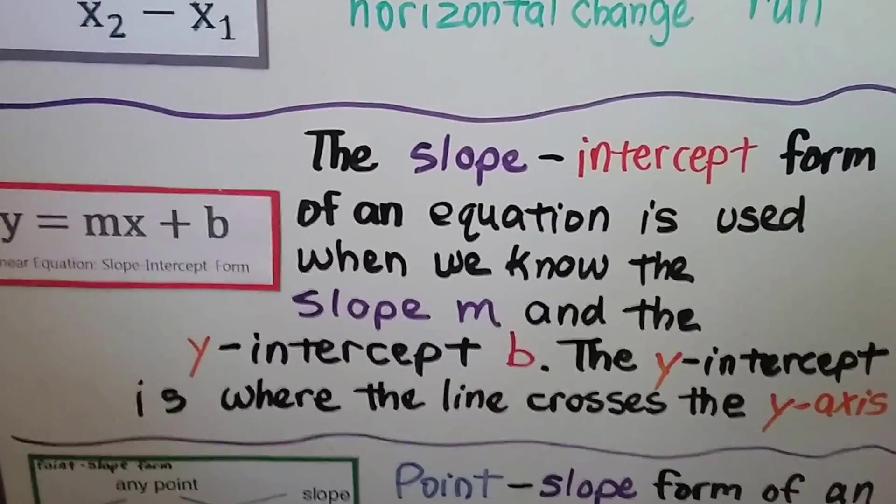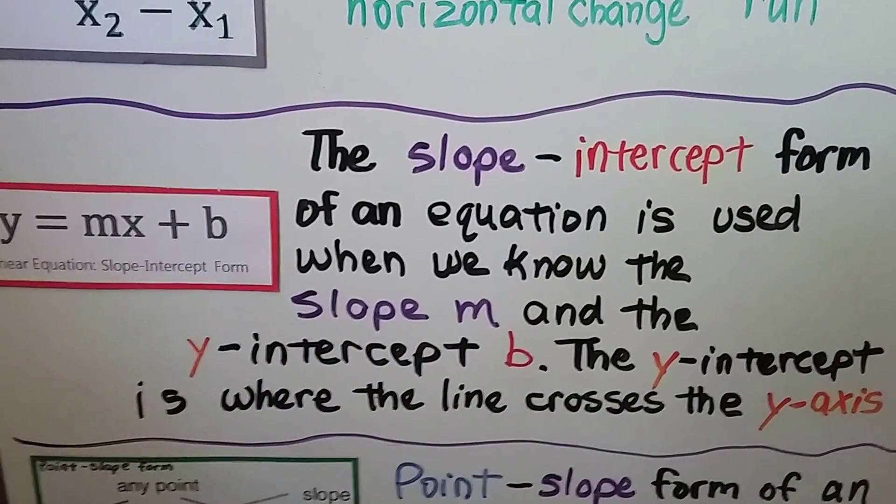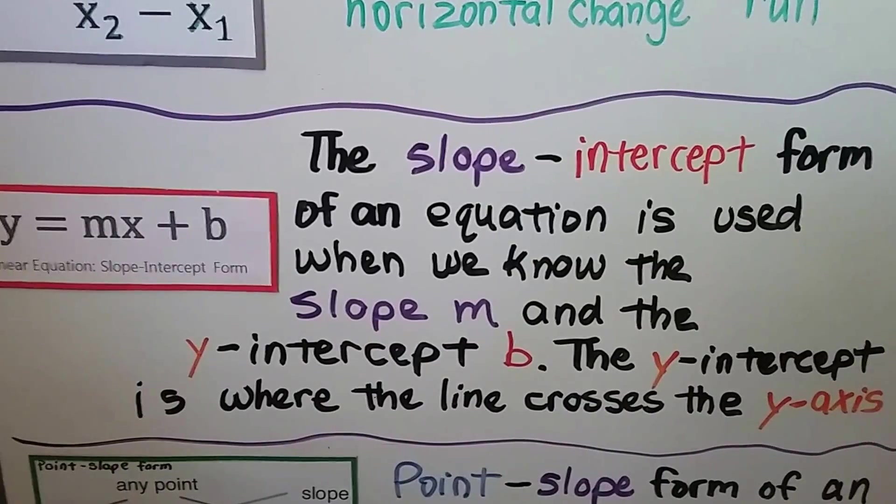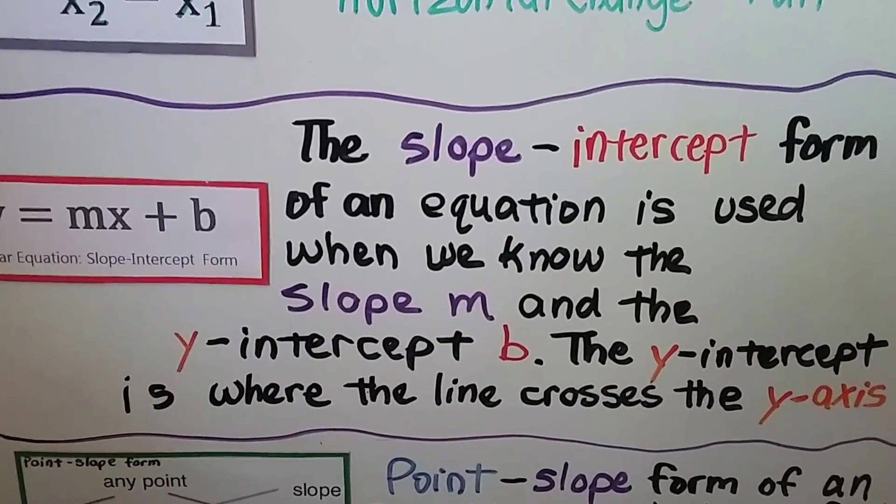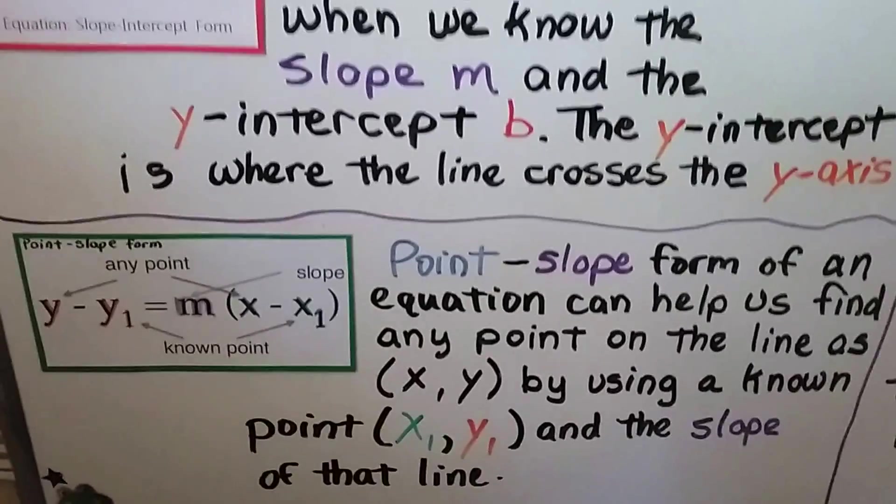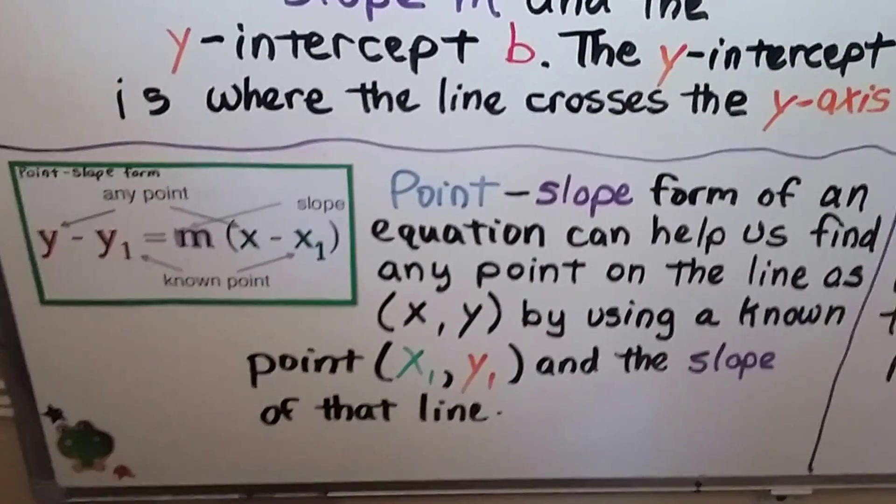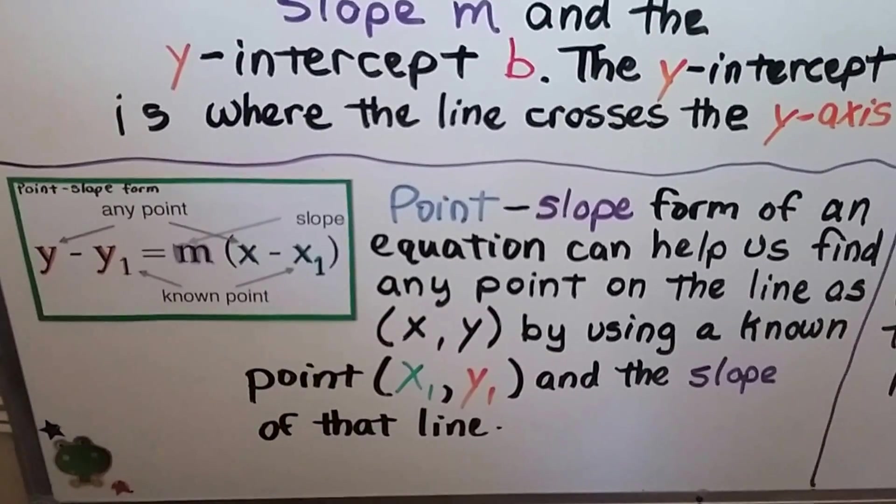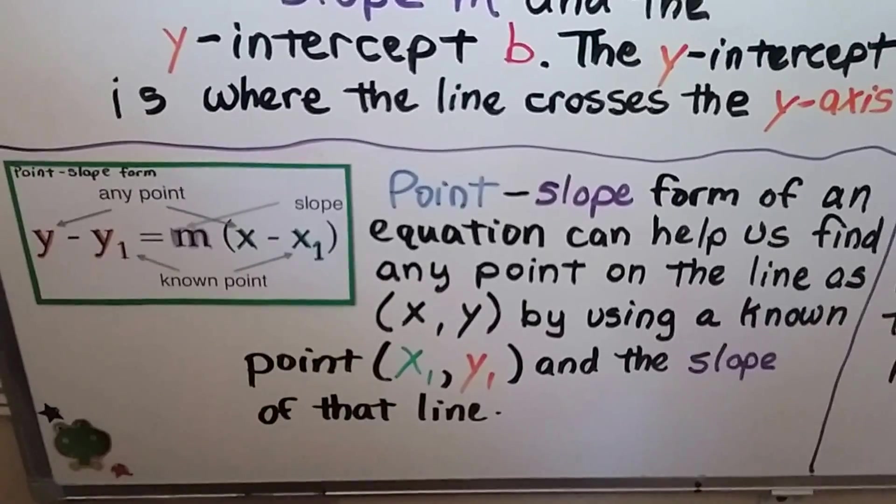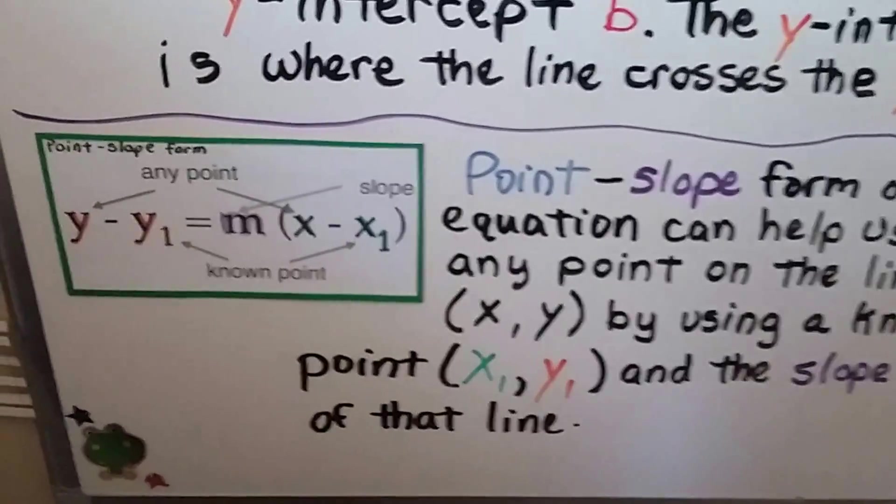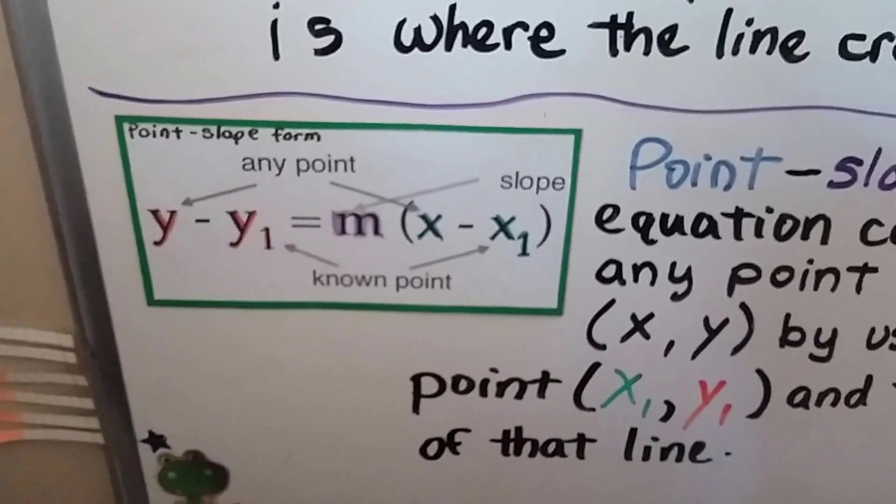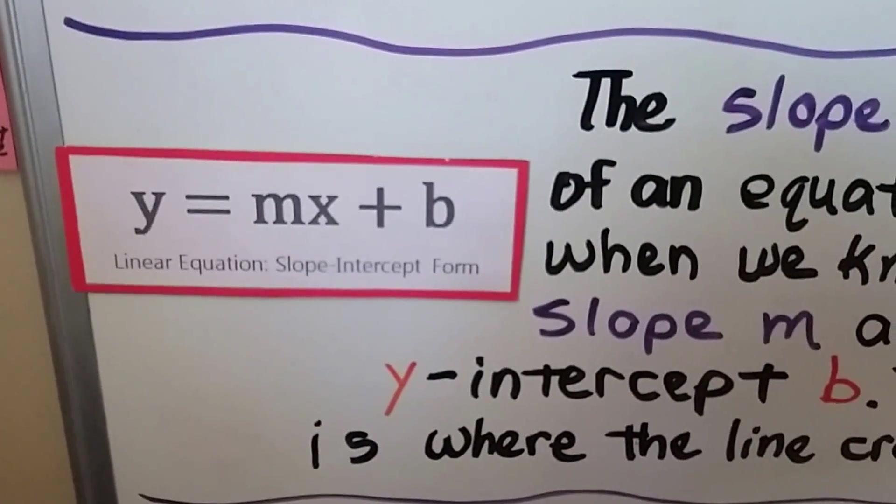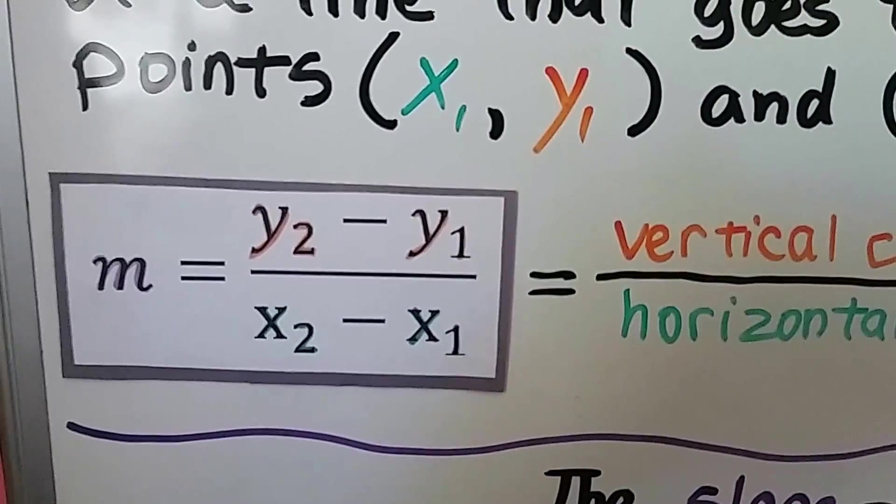We learned the slope-intercept form of an equation is used when we know the slope m and the y-intercept b, which is where the line crosses the y-axis. And point-slope form of an equation can help us find any point on the line as (x, y) by using a known point (x₁, y₁) and by using the slope of that line. This is the point-slope form, this is the slope-intercept form, and this is the slope formula to find the slope.